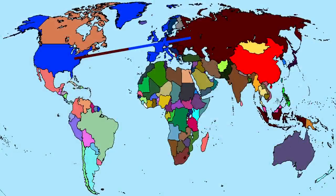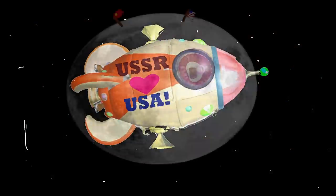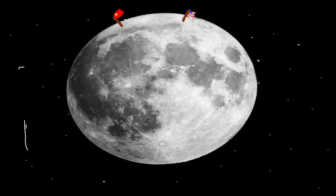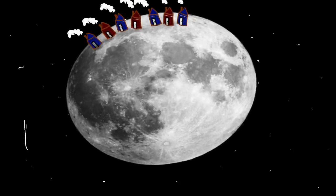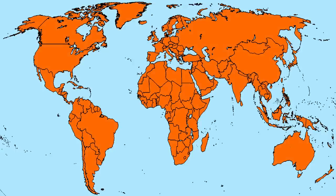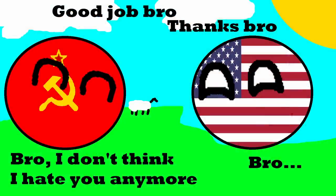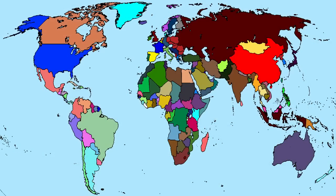Over the next decade, trade and cultural exchanges flourish and the once divided world begins to see the benefits of cooperation. By 2040, the USSR and the US have formed a political and economic alliance and the world is no longer divided by ideology. The joint space program expands and humanity begins to explore the solar system in earnest. Colonization of the Moon and Mars becomes a reality and a new era of exploration and discovery begins. As the world becomes more interconnected, national borders become less important and a new global government is formed to address the challenges facing humanity. With the threat of global conflict eliminated, the world enters a new age of peace and prosperity, and the legacy of the once divided world is remembered only as a distant memory.